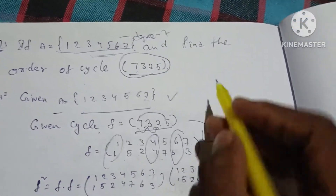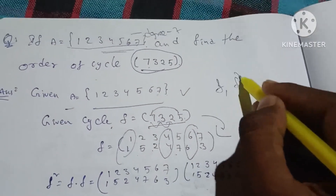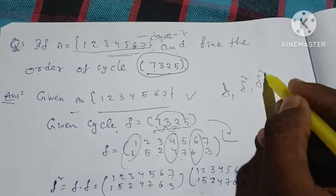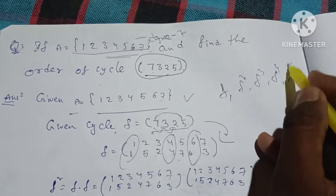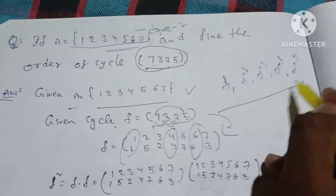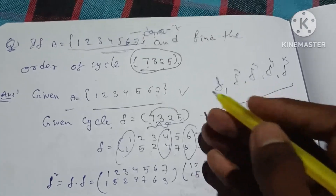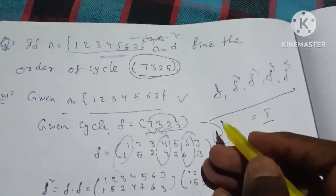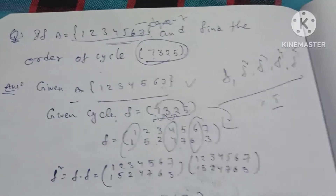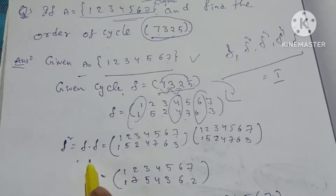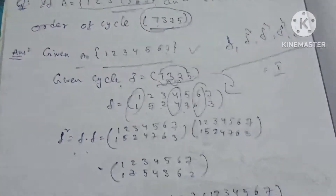So now I'm going to compute F, F², F³, F⁴, F⁵ to find where it equals the identity I. F square equals F into F.